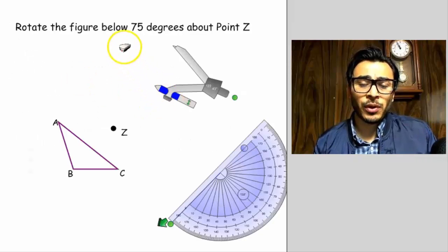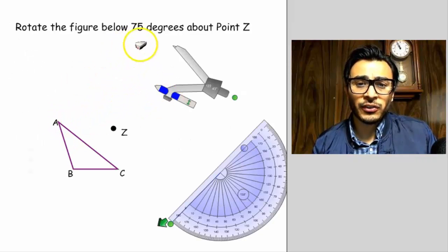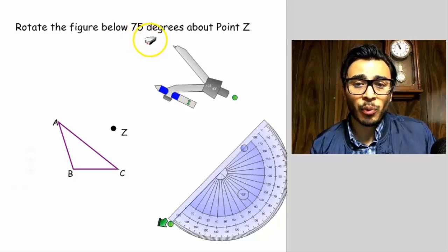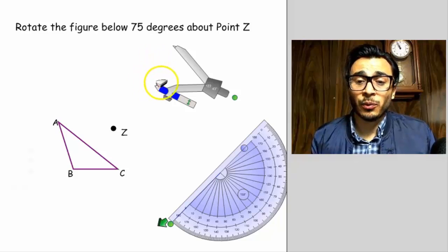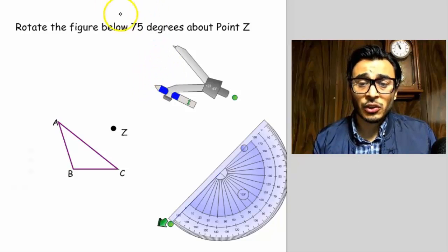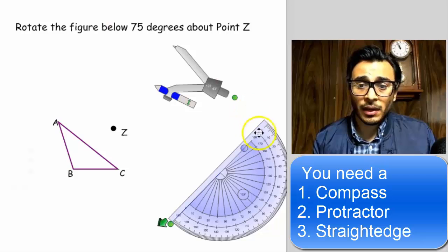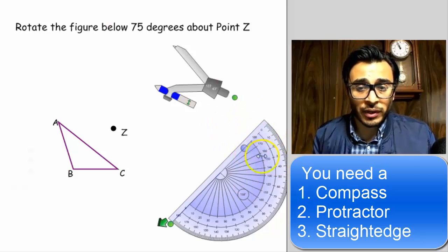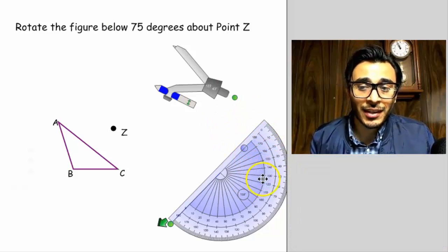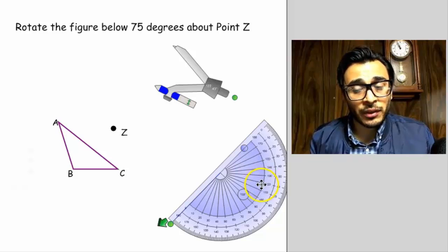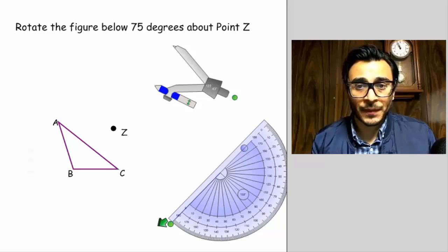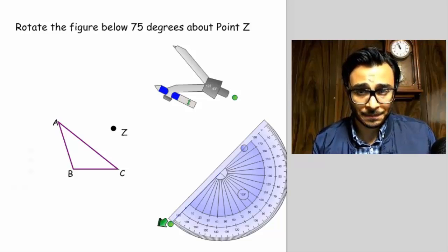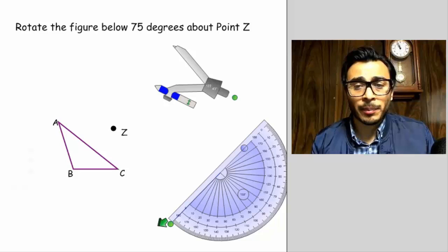So in our example we are told to rotate this figure 75 degrees about point Z. Now you need a protractor to measure the angles and you need a straight edge. And I can get away with this without the straight edge because I'm doing this on a computer screen where I can draw perfect lines. Alright so let's get to it.